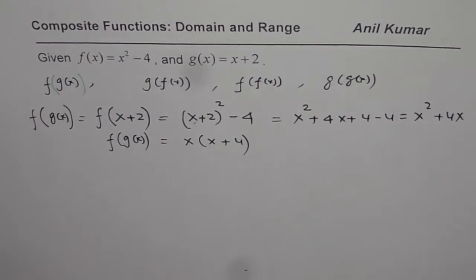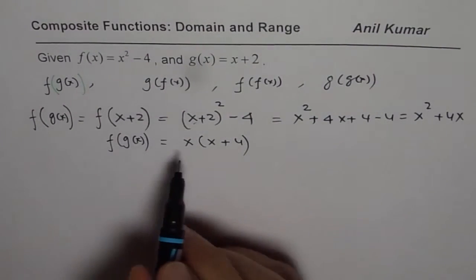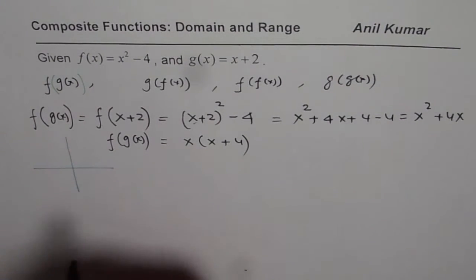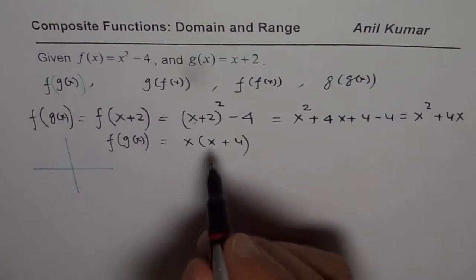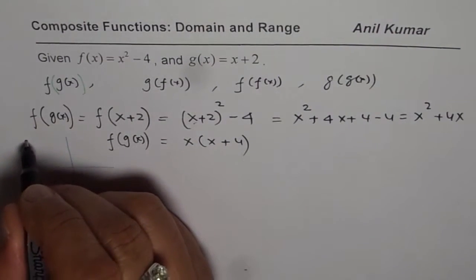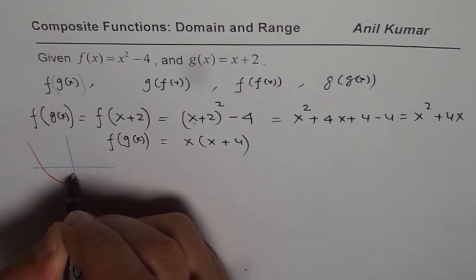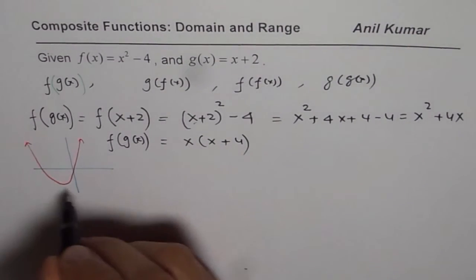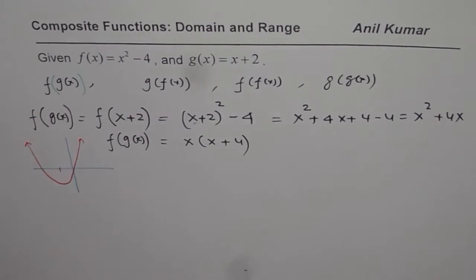That is a composite function. Now it's a good idea to sketch this function. Let's make a small sketch here. Basically it means we have 2 x-intercepts, 1 at 0, 1 at negative 4. So let me just sketch one function here. And at minus 2 we expect minimum.